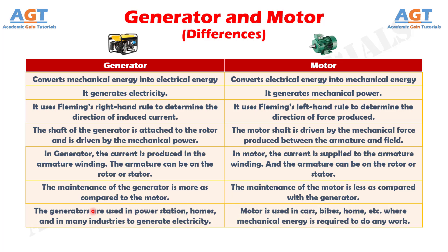Difference number 7. The generators are used in power stations, homes, and in many industries to generate electricity, whereas a motor is used in cars, bikes, homes, etc.